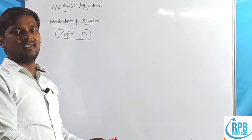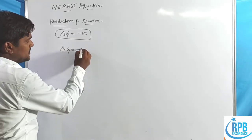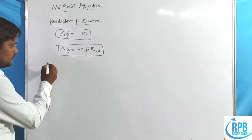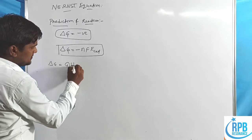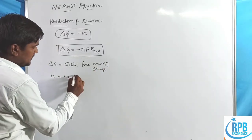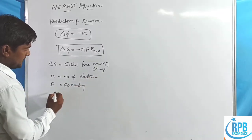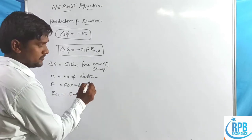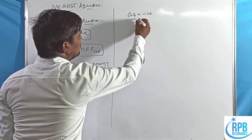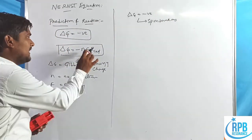The amount of electrical energy produced by any electrochemical cell is given by the thermodynamic equation: ΔG = −nFE_cell. Here, ΔG is the Gibbs free energy change, n is the number of electrons, F is Faraday's constant, and E_cell is the EMF of the cell. If ΔG is negative, then the reaction is spontaneous.